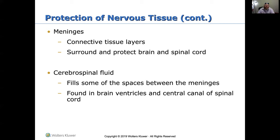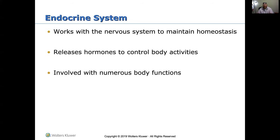Additional protection of the nervous system includes meninges — connective tissue layers that surround and protect the brain and spinal cord. Meningitis is an infection or inflammation of this connective layer. Cerebrospinal fluid fills the spaces between the meninges and is found in the brain ventricles and the central canal of the spinal cord. Sometimes cerebrospinal fluid is drawn for testing. With a neck injury, cerebrospinal fluid can actually leak out of the ears — obviously indicating damage has occurred.